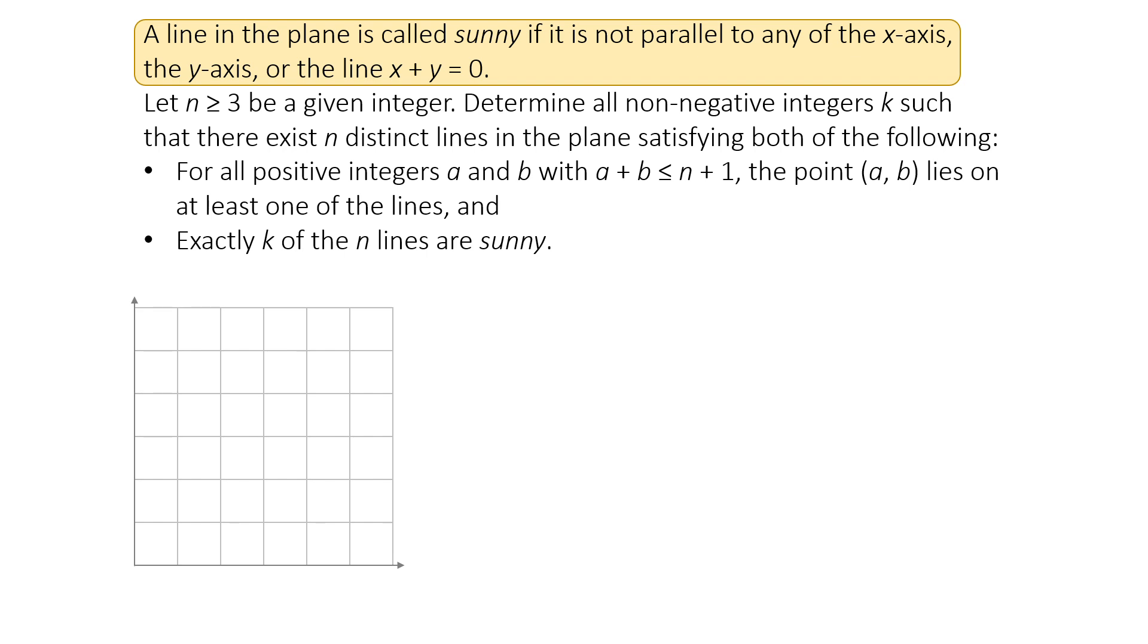So when a line is horizontal, vertical, or 45 degrees sloping downwards, they are not sunny. These blue lines are not sunny, and sunny lines can slant any other way, like slightly tilted or steeply rising or falling. The red lines are sunny lines.